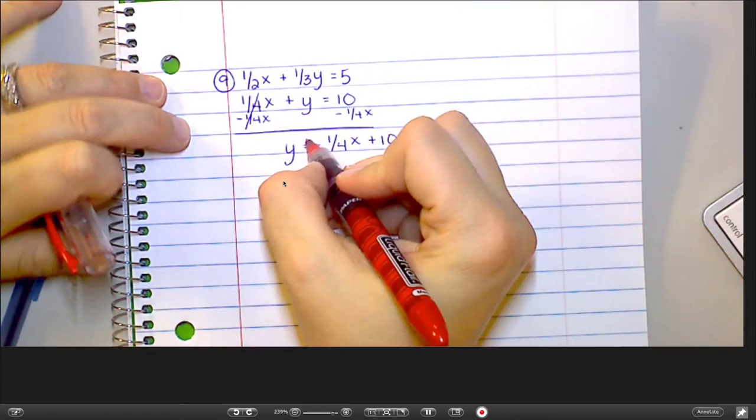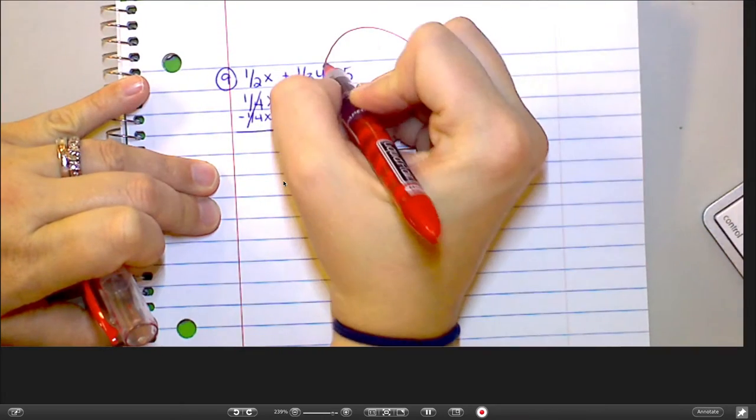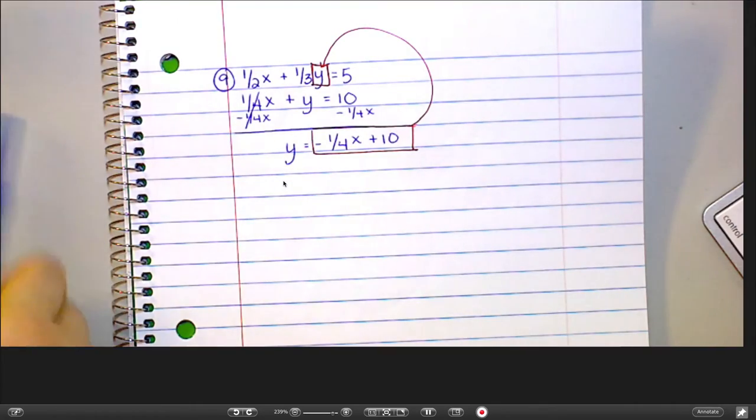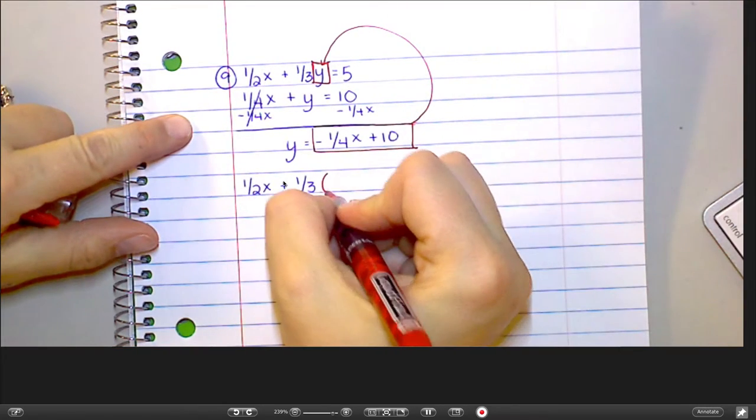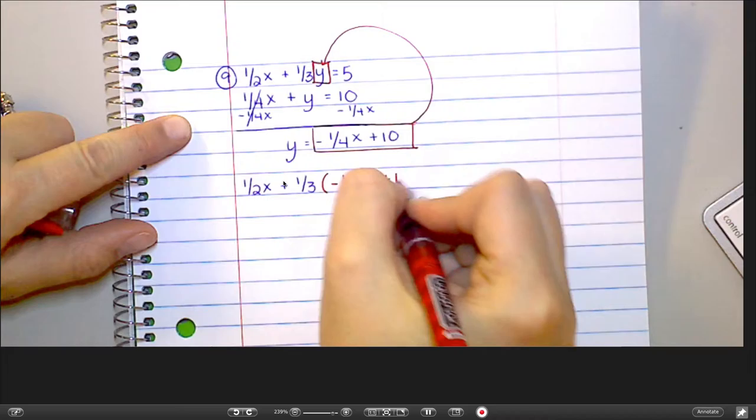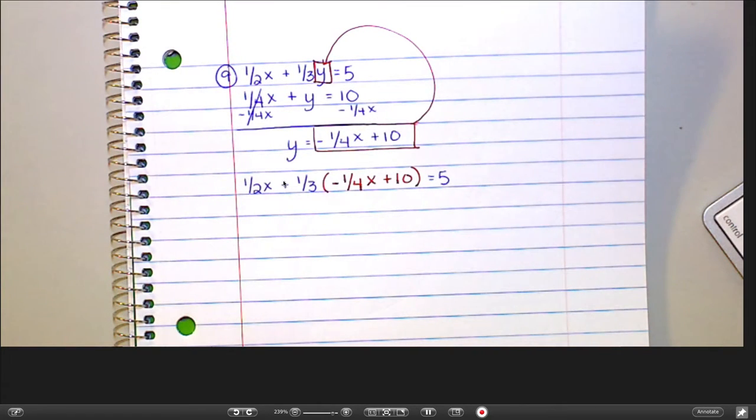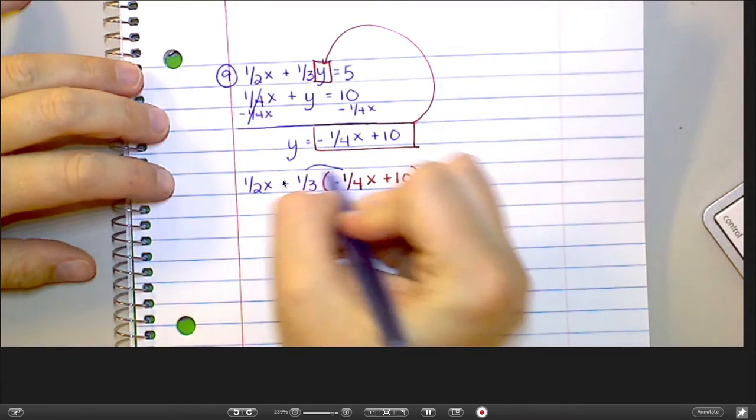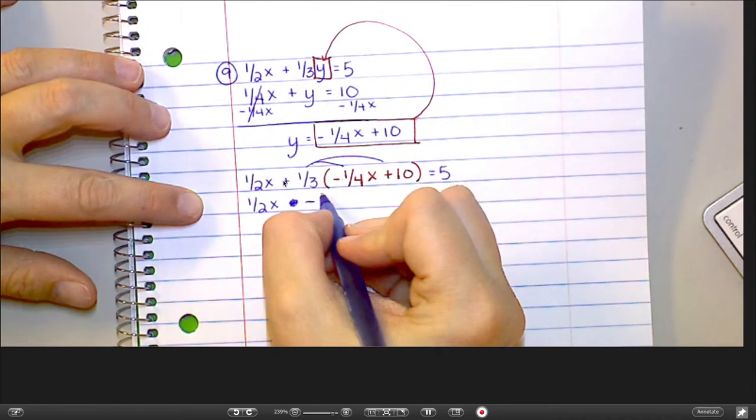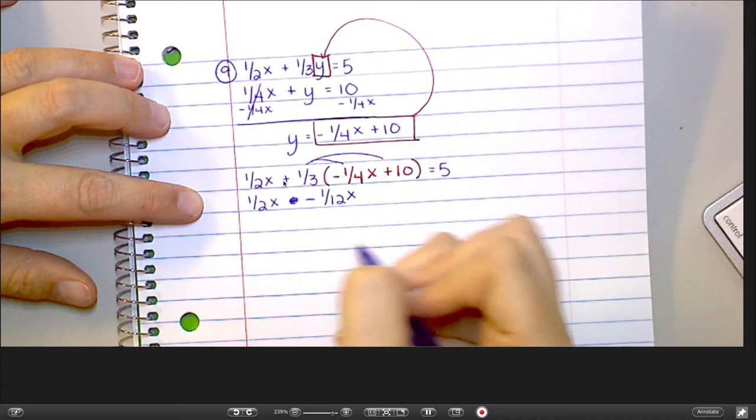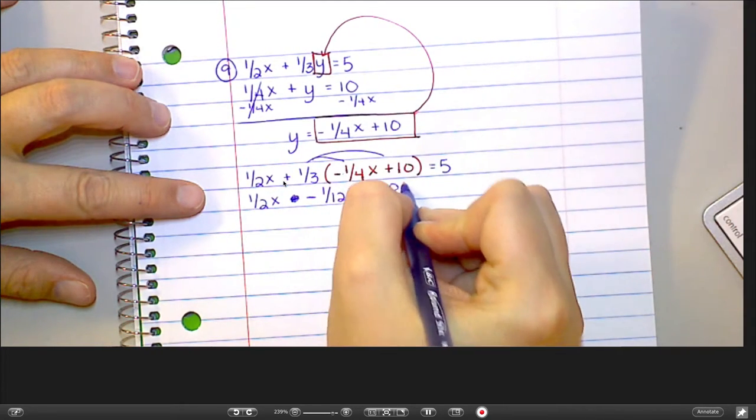I'm going to take what y equals. And I'm going to stick with fractions for a little bit. And in a minute I'll show you how to get rid of the fractions. Because I know that's the scariest part of this. But for the time being, I'm going to go ahead and stick with those fractions. So now this top equation is going to read 1 half x plus 1 third times negative 1 fourth x plus 10 equals 5. We're just going to multiply through here. So I get 1 half x minus 1 twelfth. Because 1 times 1 is 1 and 3 times 4 is 12. So that would be 1 twelfth x. And then 1 third times 10, I'm going to write as 10 over 3 equals 5.